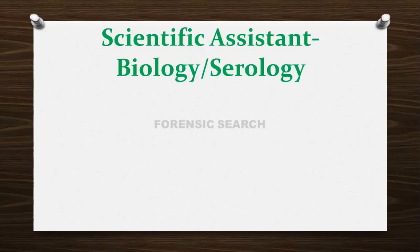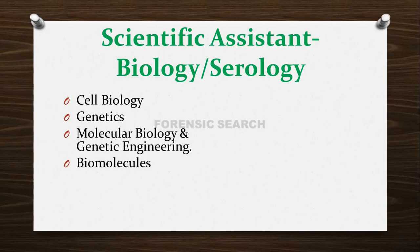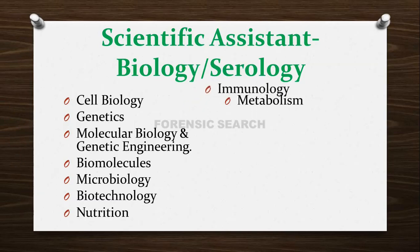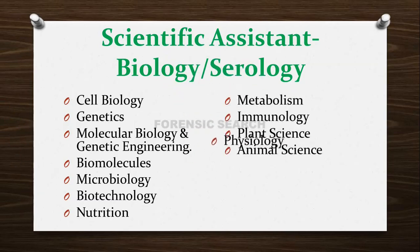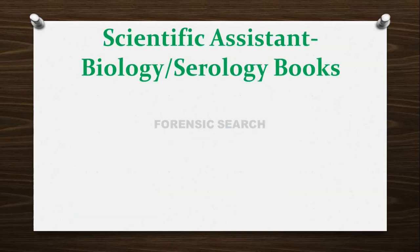For the Scientific Assistant in Biology and Serology post, looking at the syllabus — Cell Biology, Genetics, Molecular Biology, Genetic Engineering, Biomolecules, Microbiology, Biotechnology, Nutrition, Metabolism, Immunology, Plant Science, Animal Science, Physiology, Environment and Wildlife — the topics are spread across subjects, so you will need different reference books for each point.